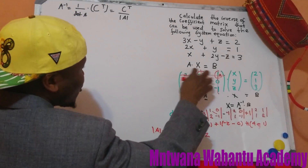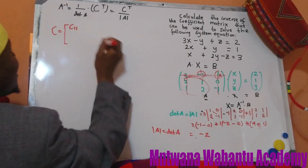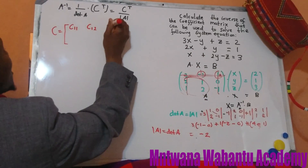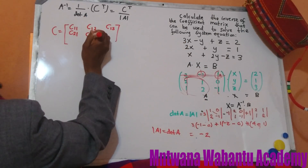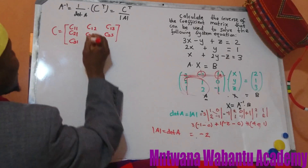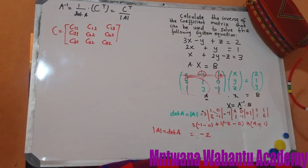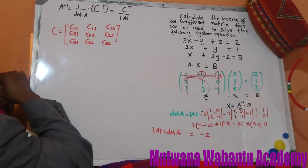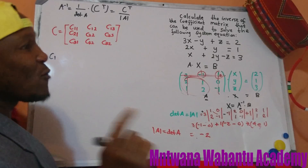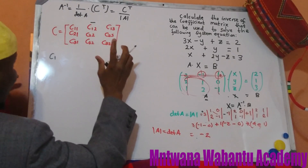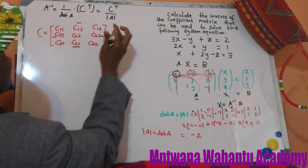So first, let's find the cofactor of a matrix. We need cofactor of row 1 column 1, cofactor of row 1 column 2, cofactor of row 1 column 3, cofactor of row 2 column 1, row 2 column 2, row 2 column 3, cofactor of row 3 column 1, row 3 column 2, row 3 column 3. Just remember: in a 3×3 cofactor matrix, the signs alternate - the diagonal positions are positive and the off-diagonal positions are negative.